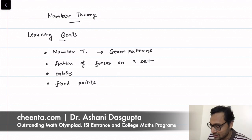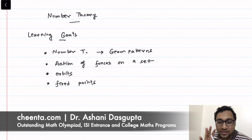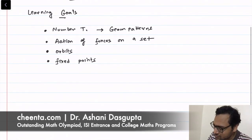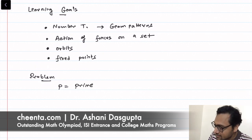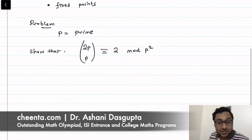There is a lot of things to unpack in this video. This is just one problem that came up in our mathematics olympiad program. It is so beautiful that I wanted to give you at least some flavor of what the problem is about. The problem is: p is a prime number — show that 2p choose p is congruent to 2 modulo p².